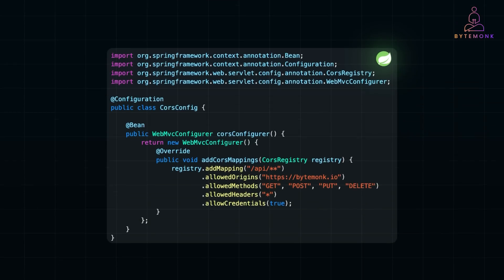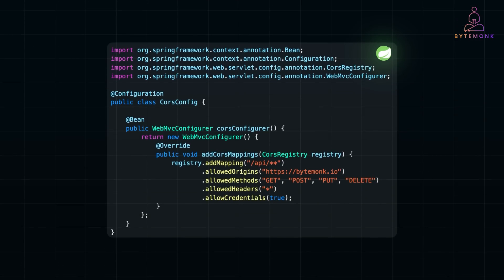Here is an example in Java. In this Spring Boot configuration class, we define a global CORS policy for our backend API. The @Configuration annotation marks this as a configuration class, and we provide a WebMvcConfigurer bean that customizes CORS settings. The addCorsMappings method allows cross-origin requests to any endpoint under /api, but only from https://bytemonk.io. We also specify which HTTP methods and headers are allowed and enable credential support.